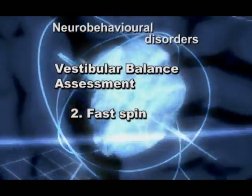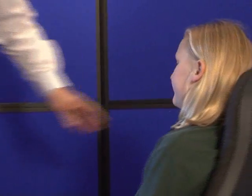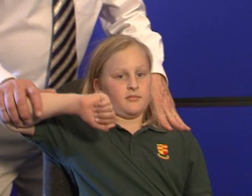Fast spin. Fast spin in a swivel chair with eyes open to the right or clockwise ten times. Then test a strong indicator muscle on the right.